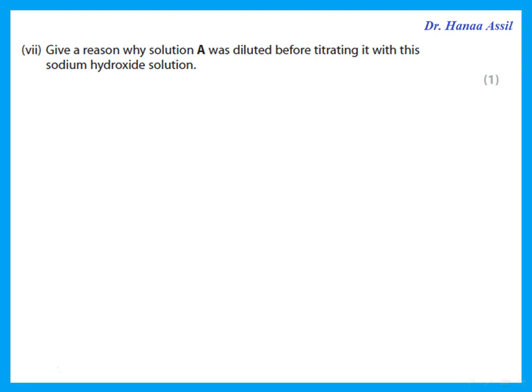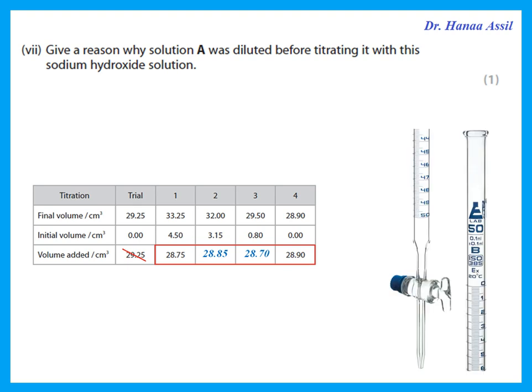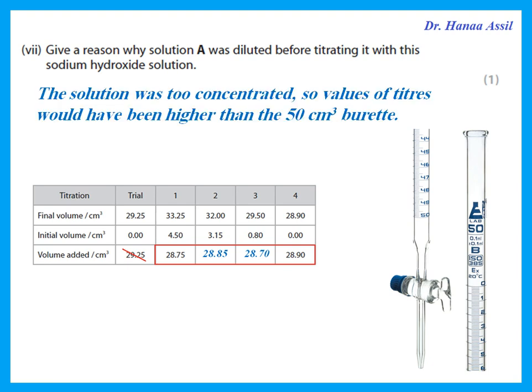Give a reason why solution A was diluted before titrating it with sodium hydroxide. When we titrated the diluted solution, we needed about 28.8 cm³ from the burette. If we hadn't diluted it, we would have needed much more — more than 50 cm³ — but the burette only goes to 50. So the original solution was too concentrated, and the titre values would have exceeded the burette capacity.